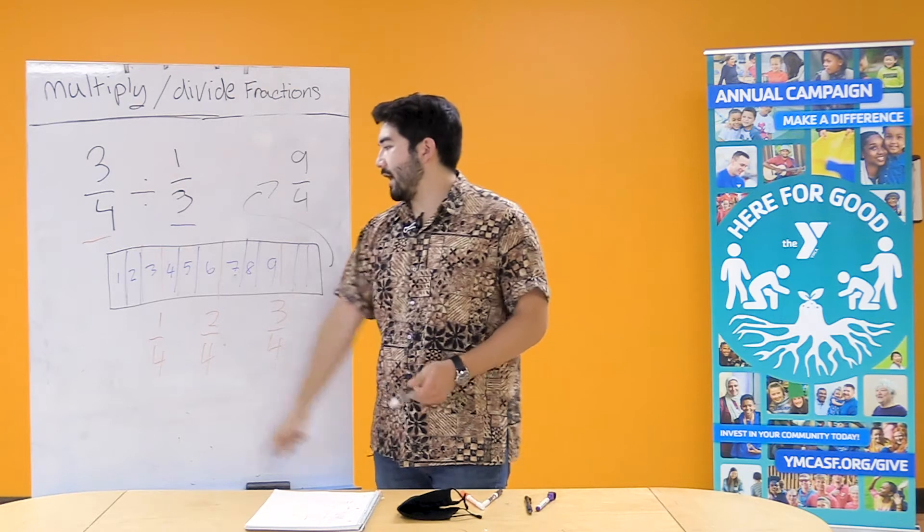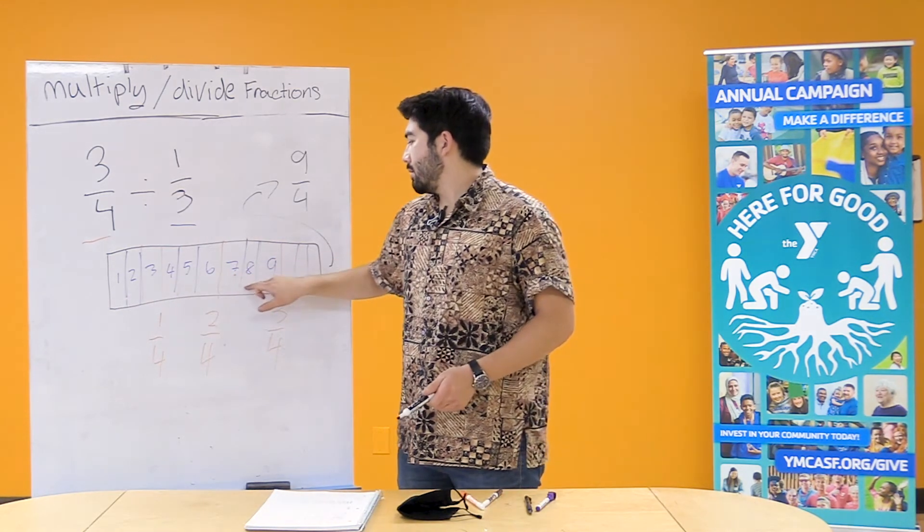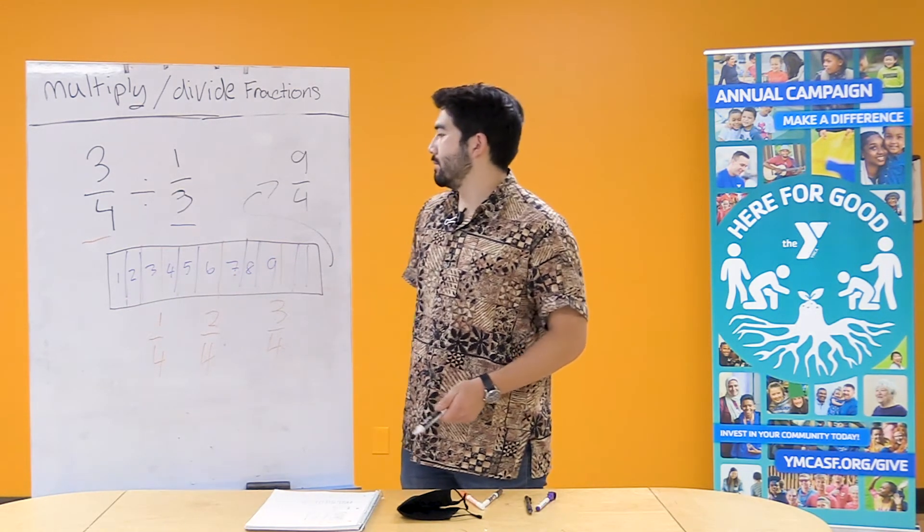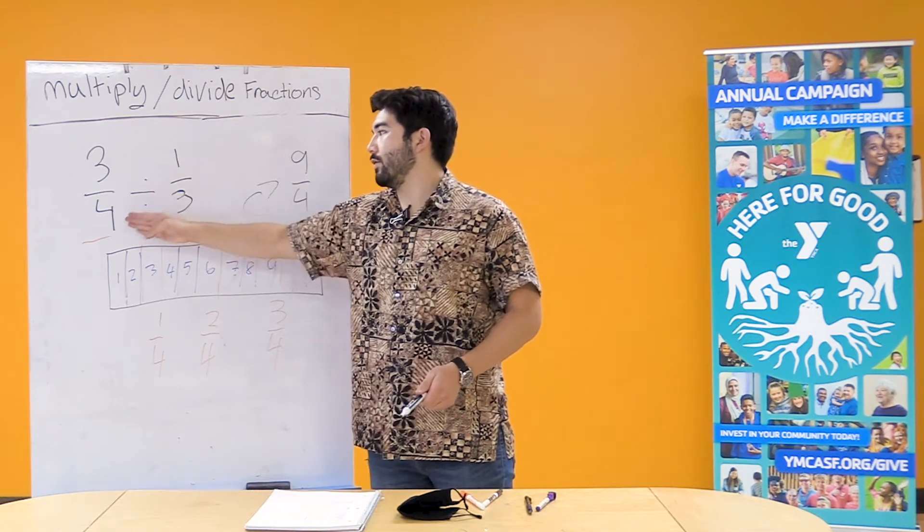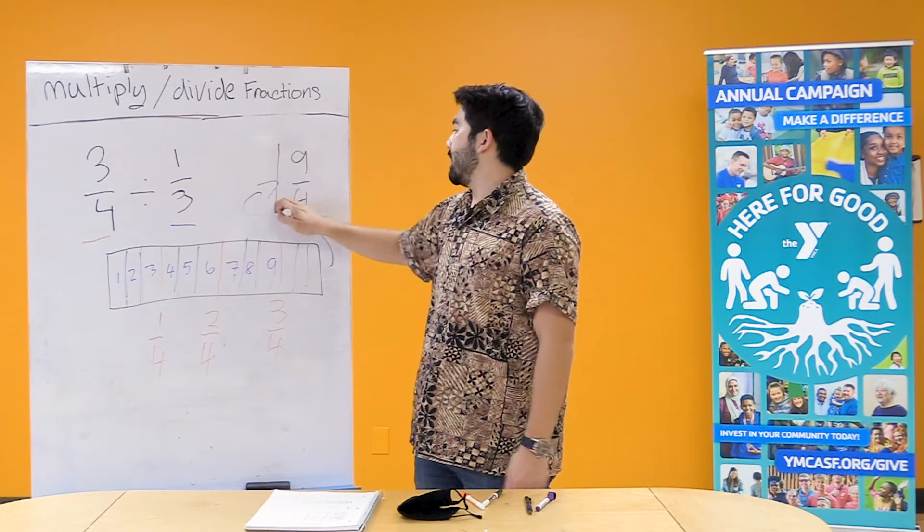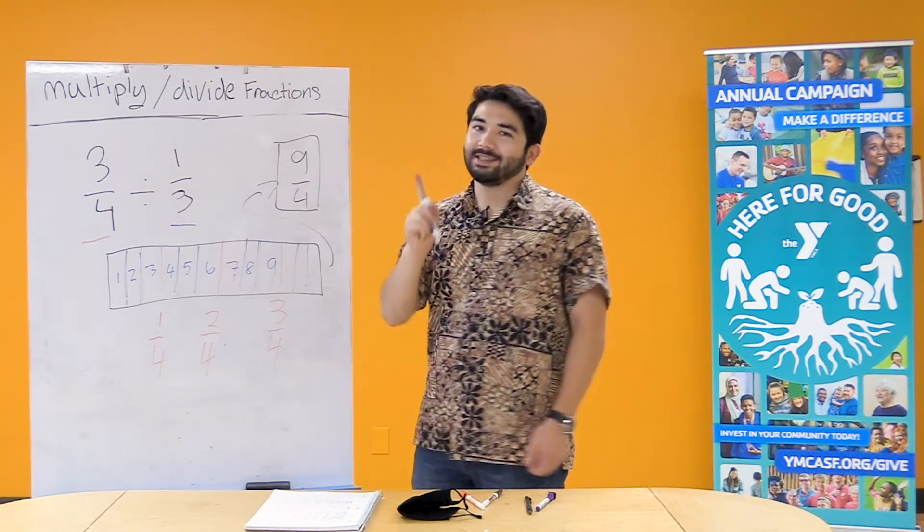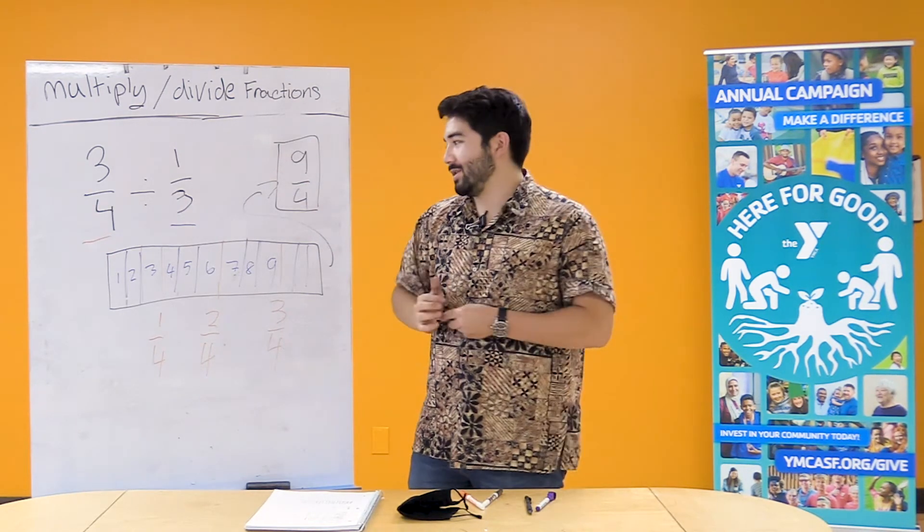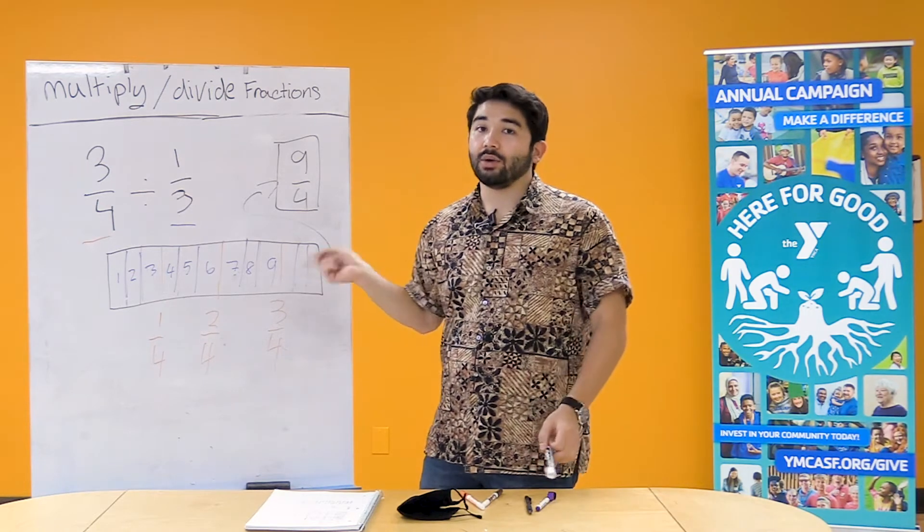So what we did, I counted all the thirds that make up three fourths. So 3/4 divided by 1/3 is gonna equal 9/4. And once again, you're just gonna have to trust me, but I can prove this using arithmetic. So this is how you do it with the diagram.